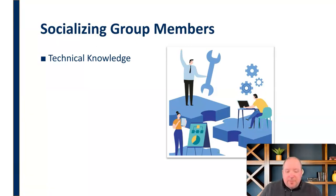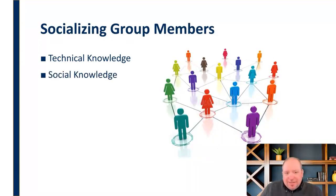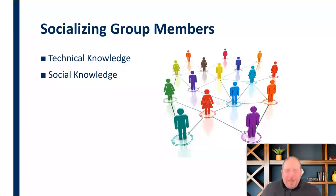There are a couple of different categories here that we need to consider. First is the technical knowledge — they need to know how to do what you want them to do, to be taught the different aspects of their role and their job and how to do different functions. These are the task-related things. They need that technical knowledge and that's something we have to give them. Every job is different, every group is different, so when somebody comes in, we've got to teach them how to do what we need them to do and how we want them to do it as a group.